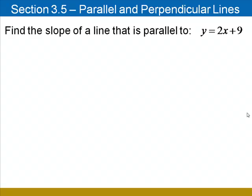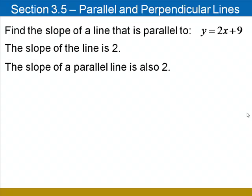Let's find the slope of a line that's parallel to the line y equals 2x plus 9. The slope of this line is 2 and the slope of a line that's parallel to it must have the same slope, so its slope would also be 2.